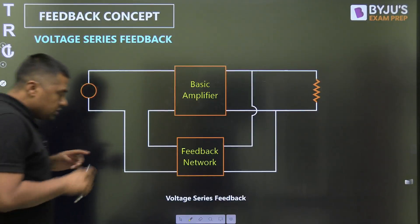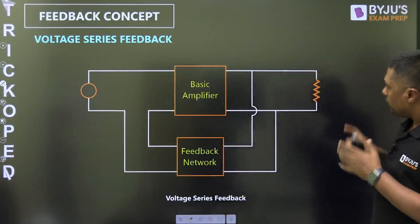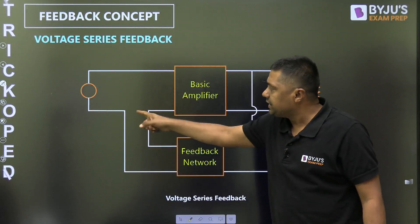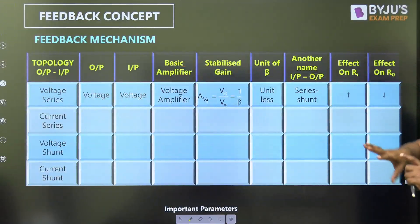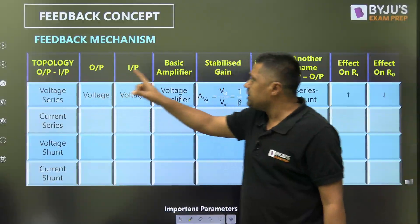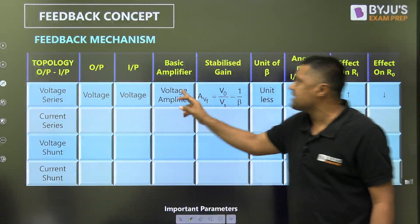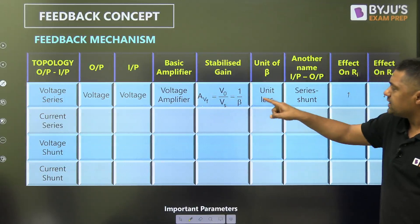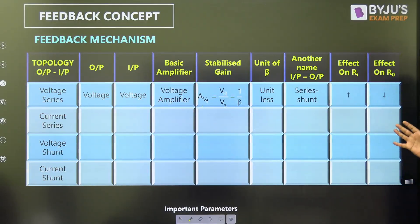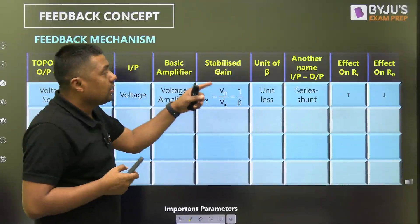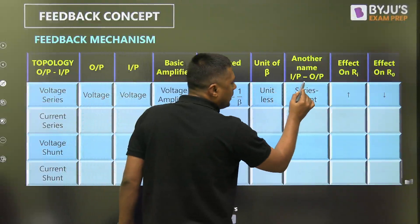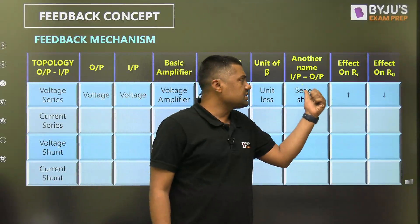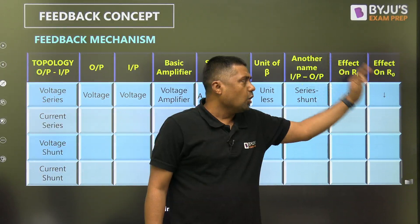Here is the trick: output resistance decreases because there is a shunt connection at output, and input resistance increases because there is a series connection at input. The stabilized gain is 1/β, which is unitless — that's why β is also unitless. Another way to remember: at input, the connection is series, so input resistance increases; at output, the connection is shunt, so output resistance decreases. This is the short trick.